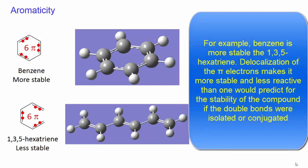For example, benzene is more stable than 1,3,5-hexatriene. Thus, delocalization of the pi electrons makes it more stable and less reactive than one would predict for the stability of a compound if the double bonds were isolated or conjugated.